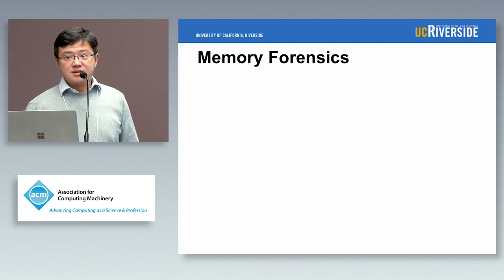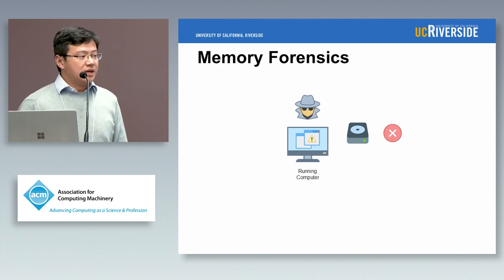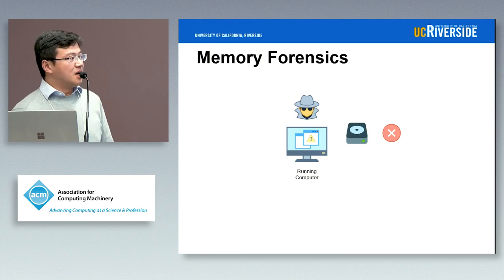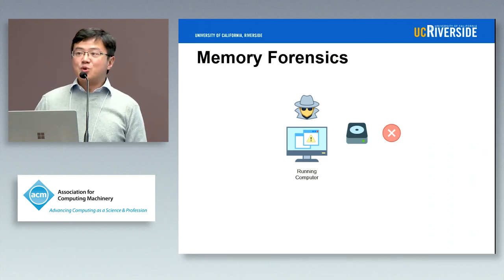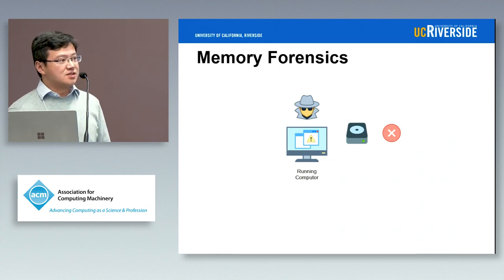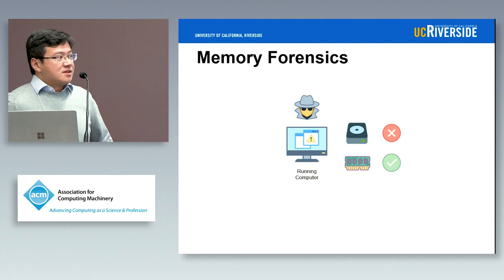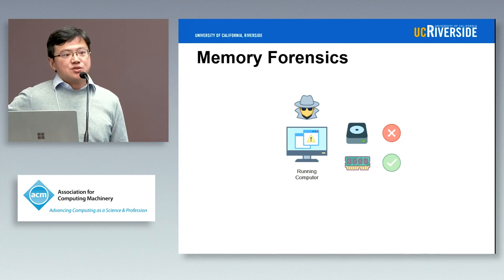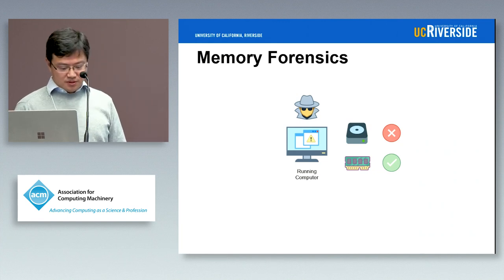First of all, what is memory forensics? It's a branch of digital forensics. Traditionally, people extract information from hard drives to collect digital evidence for crime or malware analysis. But more advanced attacks have become more stealthy — they try to avoid leaving footprints on hard drives, making that kind of analysis increasingly irrelevant. Nowadays, more and more forensics analysis tools focus on memory, because no matter what — benign or malicious — a program has to reside in memory to function. This is why memory forensics is more and more important.